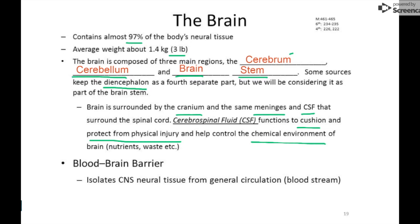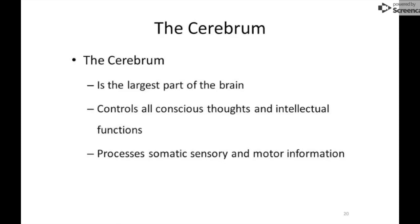When doctors perform a spinal tap, they remove some of that cerebrospinal fluid to test for infections. Another key concept is the blood-brain barrier — a barrier associated with the blood vessels that keeps most chemicals from diffusing into nervous tissue. Neurons are super sensitive and important, so they're kept isolated. Very few substances get through; exceptions include drugs of abuse and alcohol, which are able to cross that barrier.